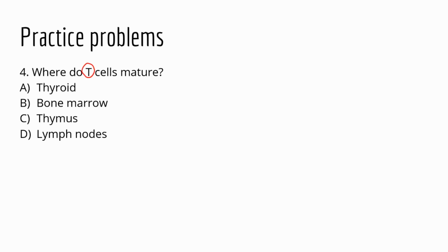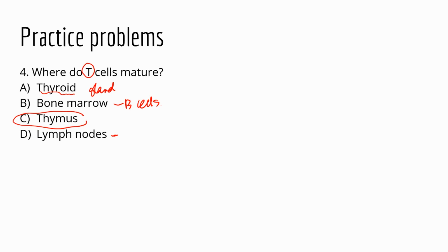Question four: where do T cells mature? The letter T should give you a hint — the correct answer is the thymus. The thyroid is an endocrine gland that secretes thyroid hormones important for metabolism. Bone marrow is where B cells mature. Lymph nodes are places where lymph is filtered and inspected — immune cells residing there deal with any foreign substances. More details will follow when we cover the lymphatic system.